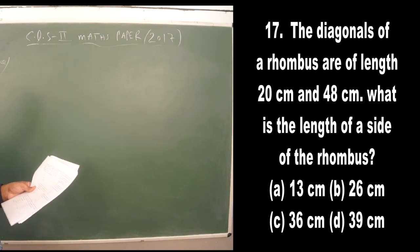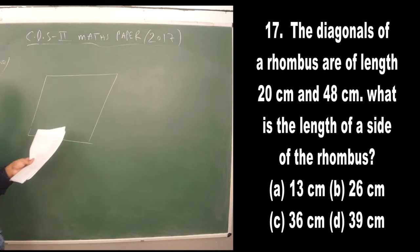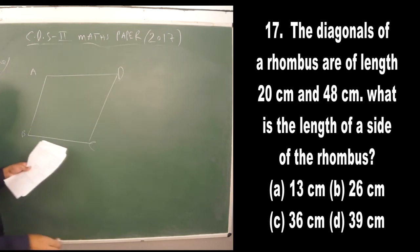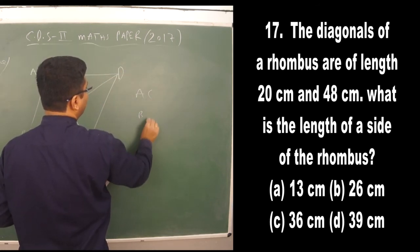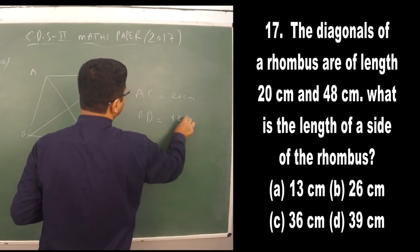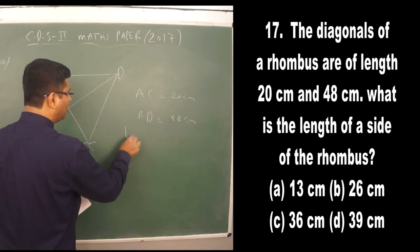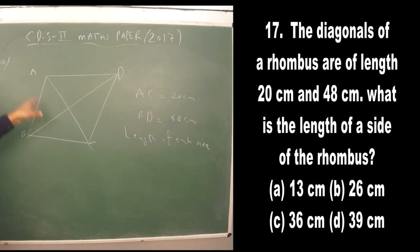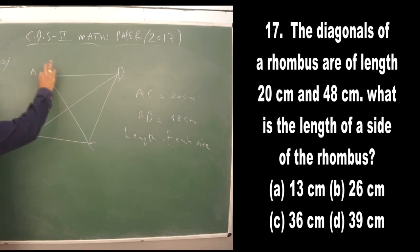The next question is about a rhombus ABCD — a four-sided figure with all sides equal. The diagonals are given as AC = 20 cm (shorter) and BD = 48 cm (longer). We need to find the length of each side.